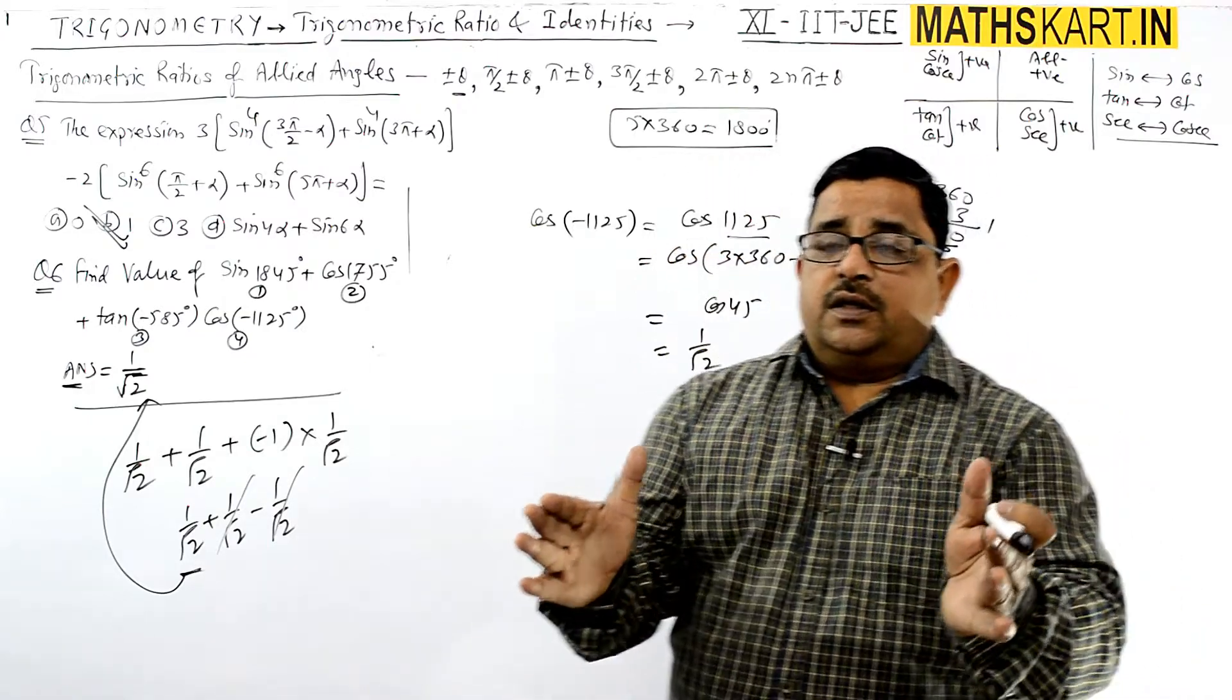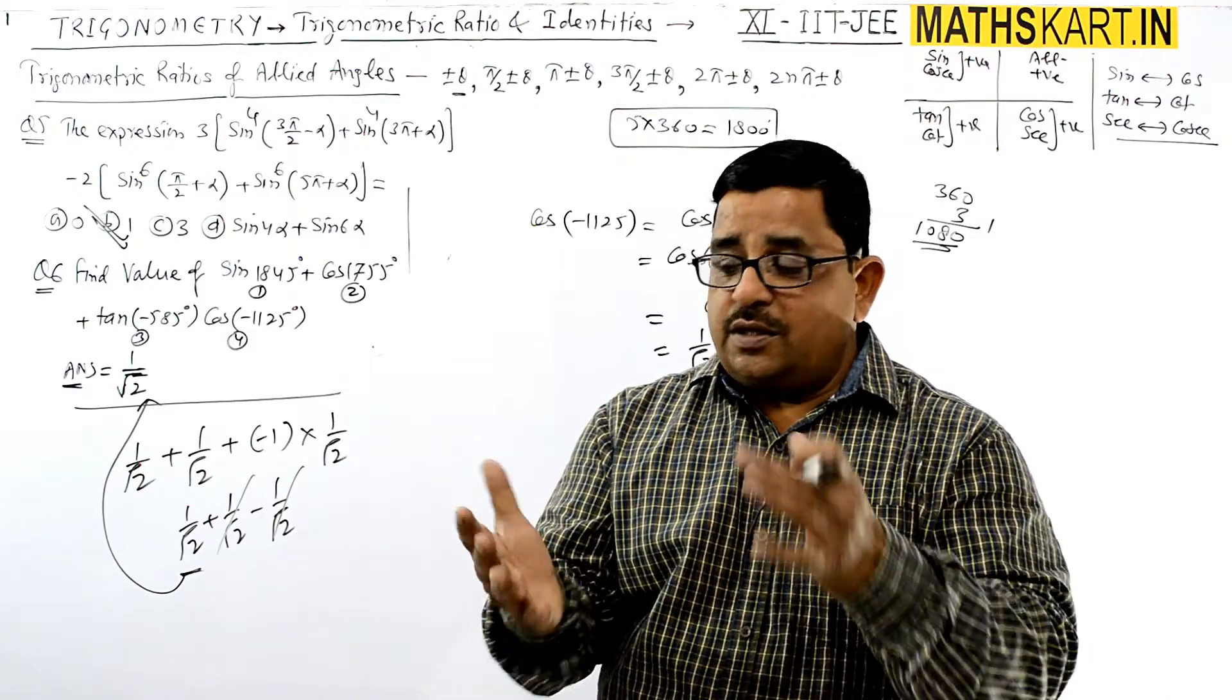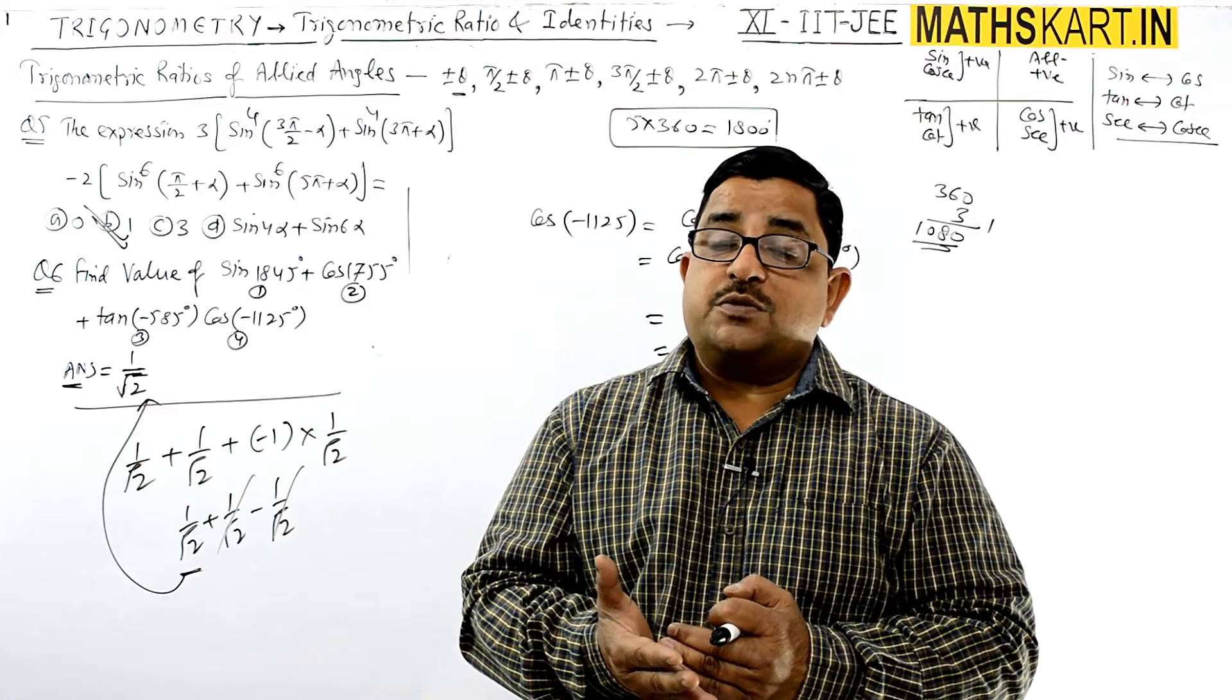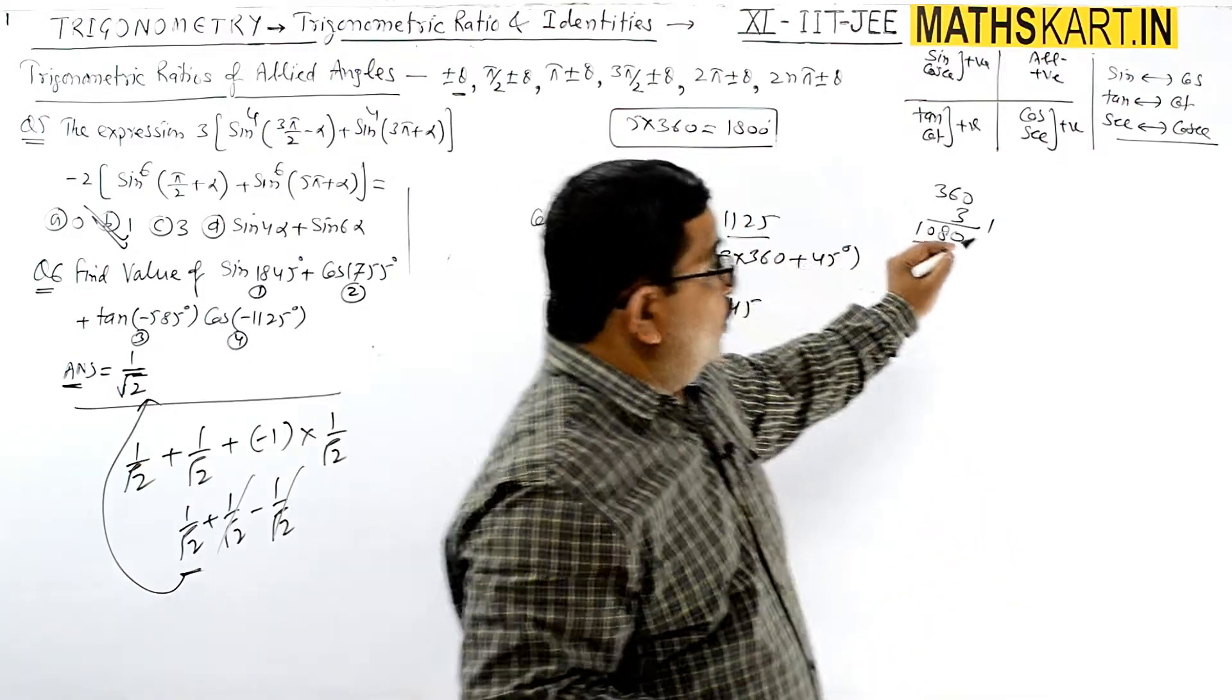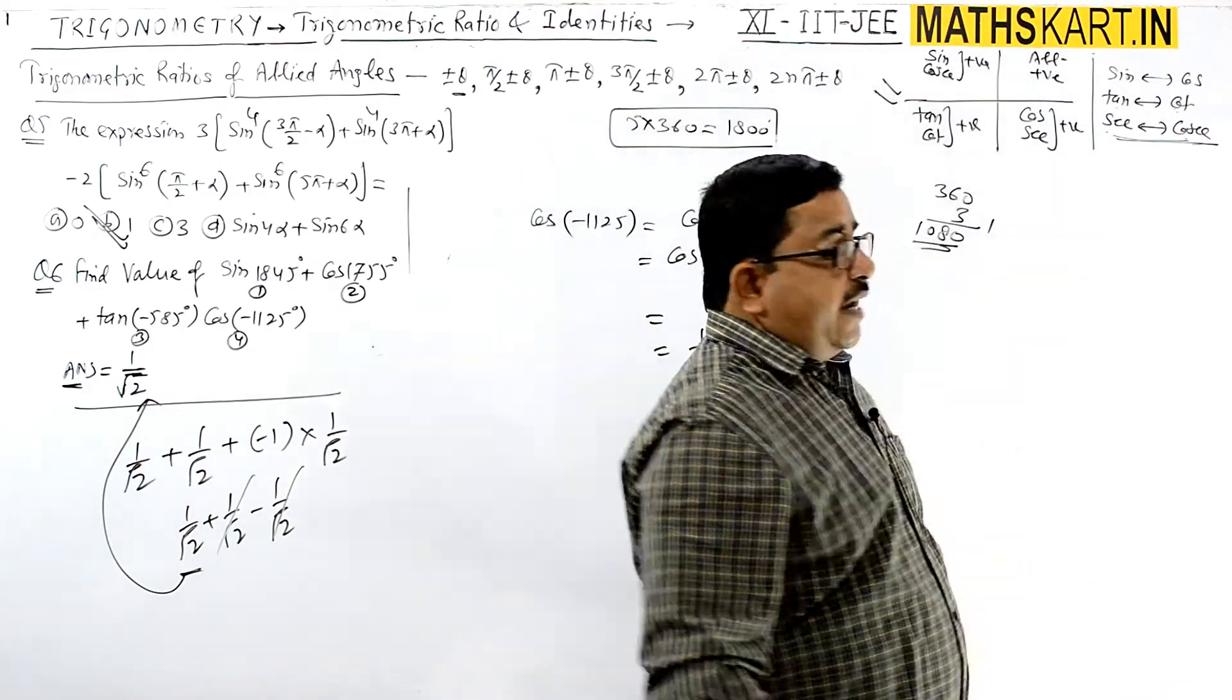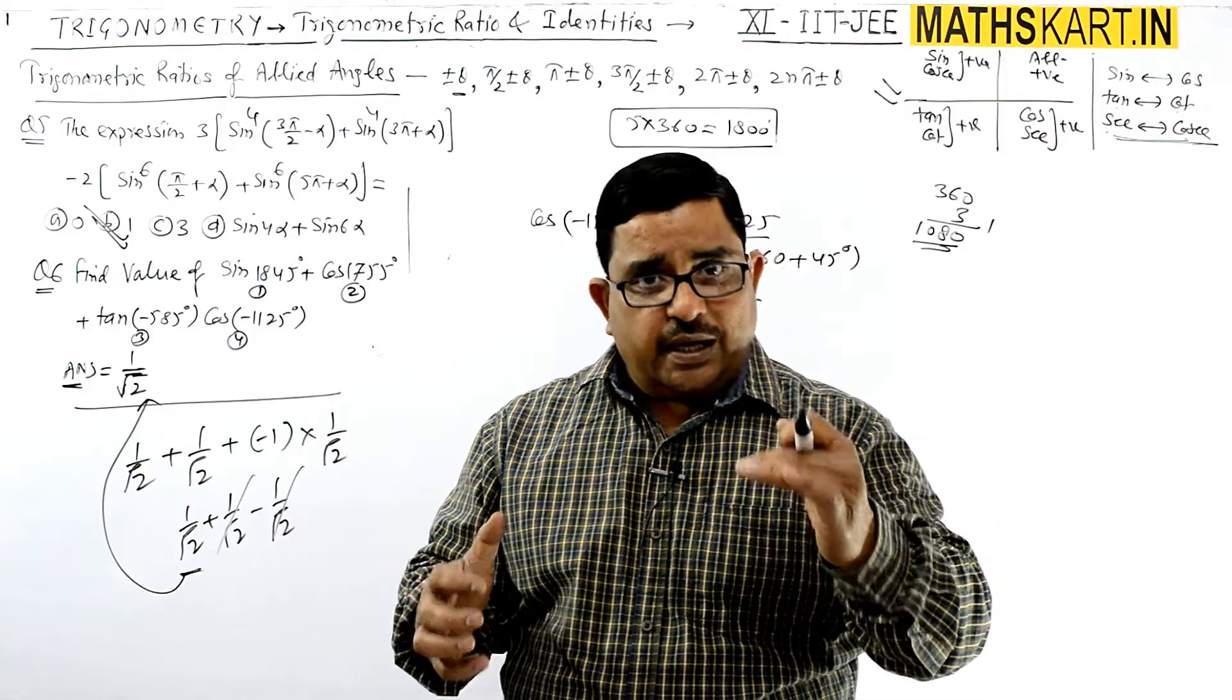This is how to find the values of allied angles in the quadrant system, an important point. You should be expert in finding these values. You should know the sign decision, and the second point is knowing how the value changes with plus minus θ. In 90 plus minus θ it changes, otherwise it doesn't. I explained this theoretically. When it changes, which one changes - sin goes to cos, cos goes to sin, tan goes to cot, cot goes to tan, sec and cosec change between each other. And the quadrant system tells us the sign decision, so that we will be able to find out any value from the quadrant system.